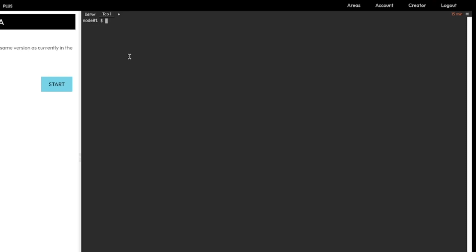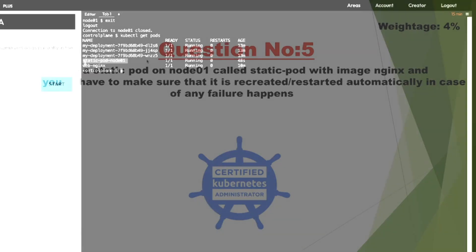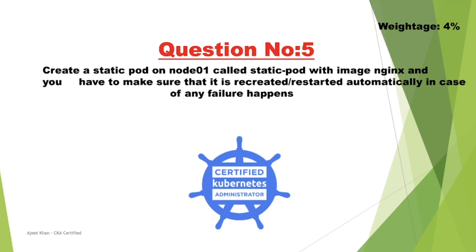We have saved the file and the static pod should be created automatically. Let us exit node01 and go back to the control plane. Now let us run kubectl get pods — as you can see, 'static-pod-node01' is created and running. This is how you create a static pod. So we have covered three questions in this video and five questions overall. Going forward the complexity will increase, but we will cover all questions in an easy manner. Please practice all these questions because ninety percent of them are going to come in the exam for sure. See you in the next video.